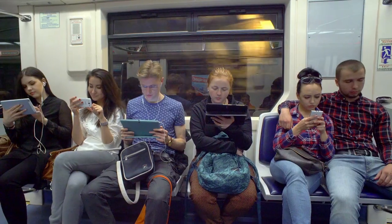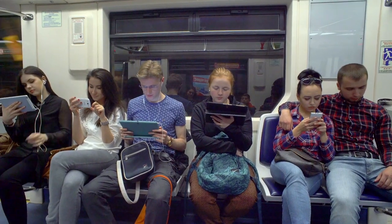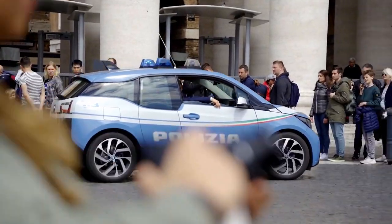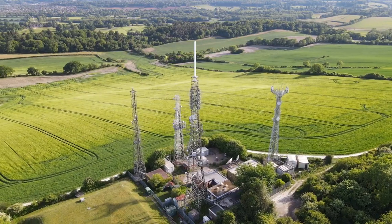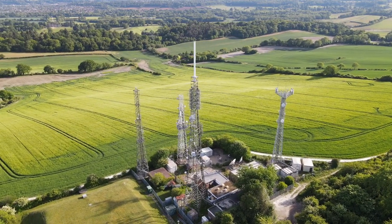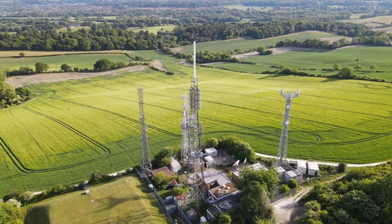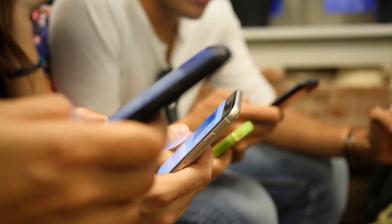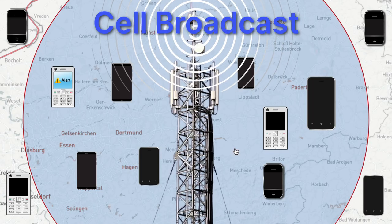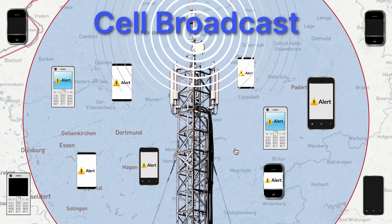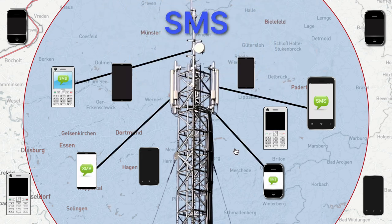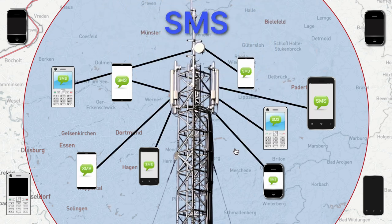Mobile phones are the most efficient way to communicate during a critical event. There are two technologies which can be used to send alerts to mobile phones: cell broadcast or SMS, or a combination of both.